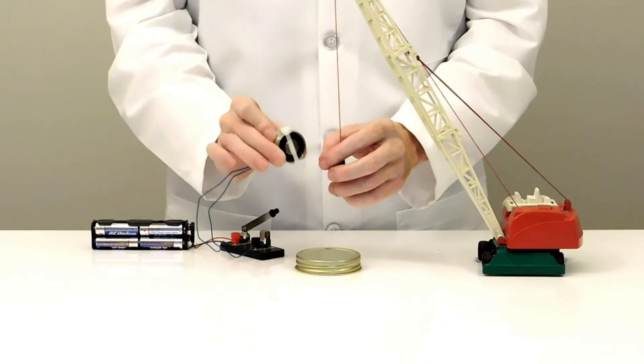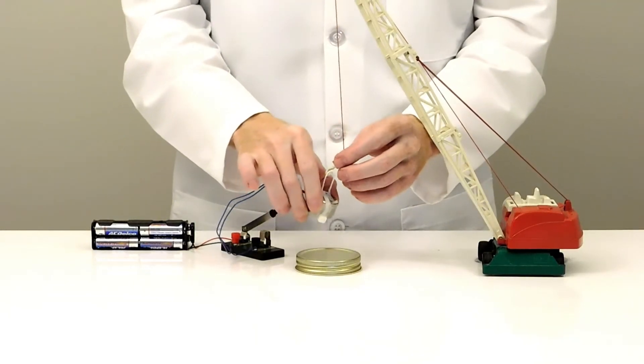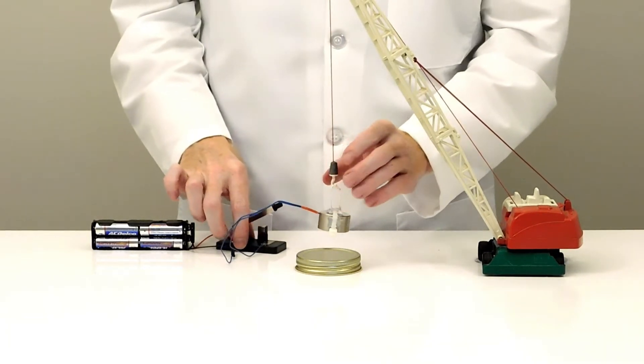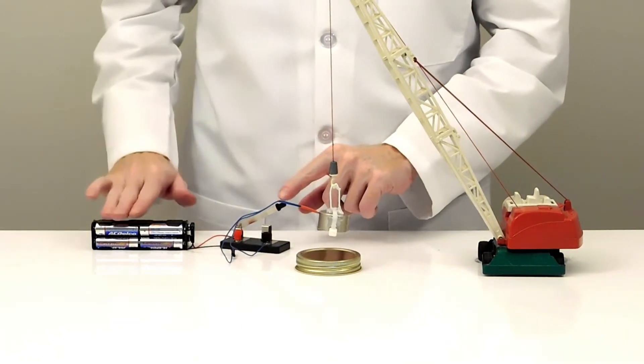We have made a small version to demonstrate how it can be used. The electric magnet hangs from a cable on the crane and is connected to a switch and a power supply.